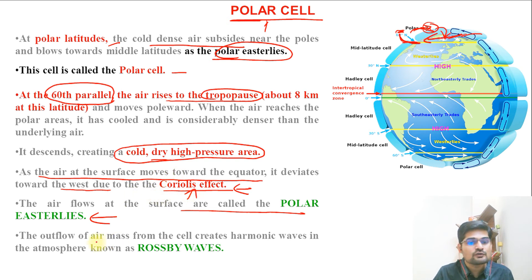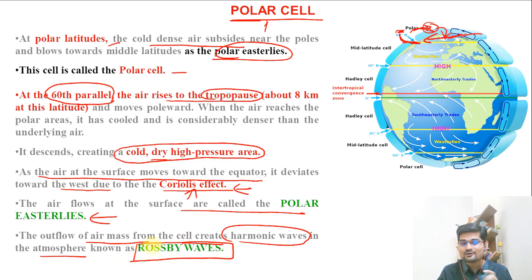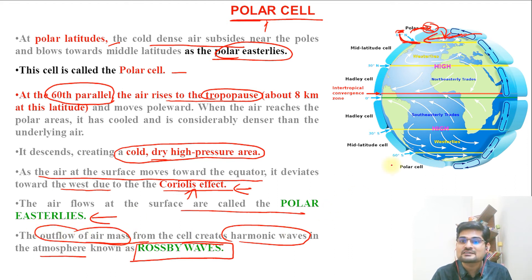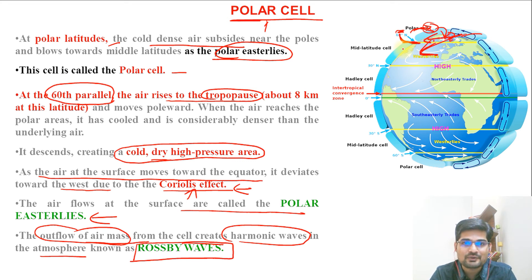The outflow of air mass from the polar cell creates harmonic waves in the atmosphere which are also known as Rossby waves. These are created by the outflowing of air masses from the polar high pressure belt moving towards the western side. This is why the polar cell is important to remember.